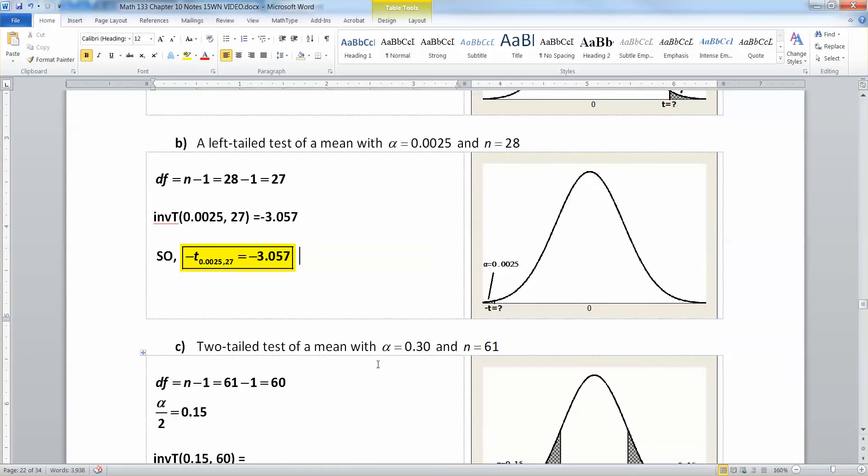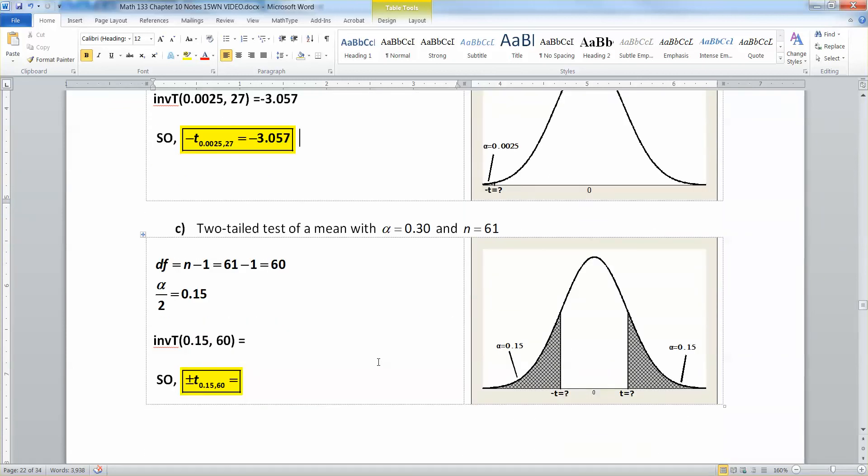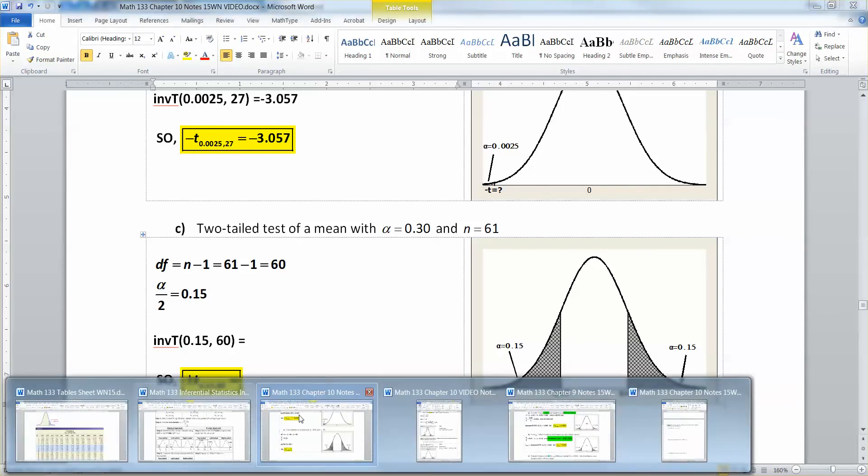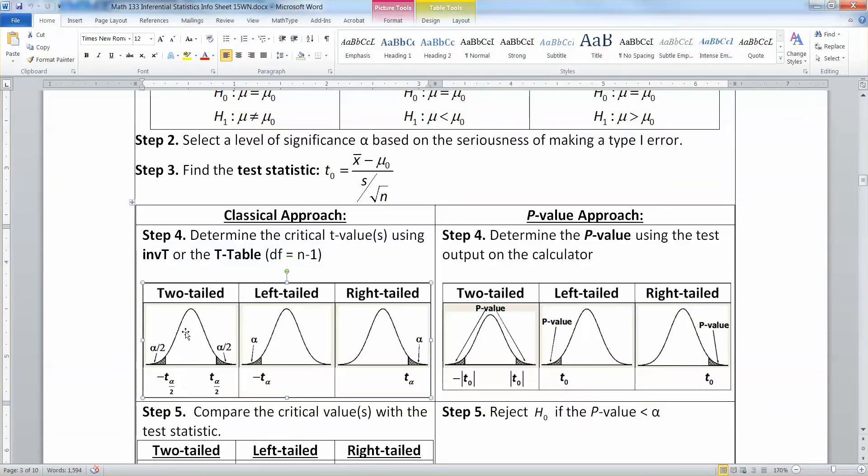All right. Now what about a two-tailed test? Okay. So alpha is 0.30, and n is 61. So to start with, I know my degrees of freedom is 60, because 61 take away 1 is 60. Then I need to take alpha, and I need to cut it in half. Because in a two-tailed test, let me grab this, you can see that each of the tails is alpha over 2. And that's why your critical values are T alpha over 2. They're the same critical values you were using for a confidence interval back in chapter 9.